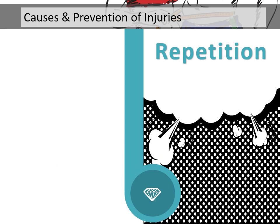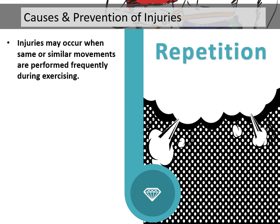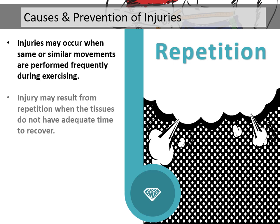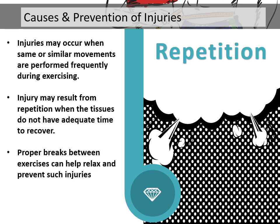Repetition. Injuries may occur when the same or similar movements are performed frequently during an exercise. Injury may result from repetition when the tissues do not have adequate time to recover. Proper breaks between exercises can help relax and prevent such injuries.